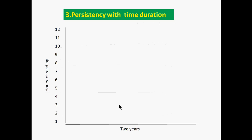The third principle is persistency with time duration. Here I have the X and Y axis showing hours of reading and duration time. Every exam has its own duration of preparation. For example, taking GRF or ERS, two years is the optimum duration calculated by analyzing the success rate of average, intelligent, and below average students.